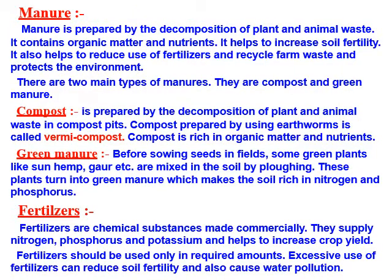Manure is prepared by decomposition of plant and animal waste. It contains organic matter and nutrients, helps increase soil fertility, reduces use of fertilizers, and recycles farm waste to protect the environment. There are two types of manure: compost and green manure. Compost is prepared by decomposition of plant and animal waste in compost pits; compost made using earthworms is called vermicompost. Green manure is made by mixing green plants like sun hemp and gourd into soil by ploughing before sowing, which enriches the soil with nitrogen and phosphorus.